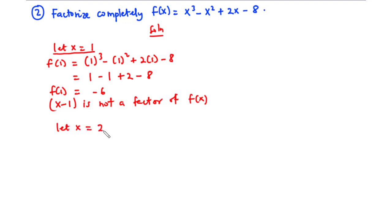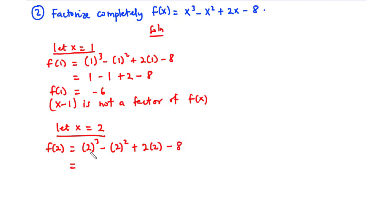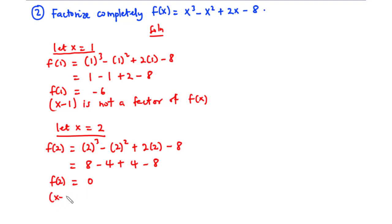So we need to check another value. Let x equal 2. Then f of 2 equals 2 cubed minus 2 squared plus 2 times 2 minus 8. That is 8 minus 4 plus 4 minus 8. So 8 minus 8 is 0, and negative 4 plus 4 is 0. So f of 2 is equal to 0. Since f of 2 equals 0, it follows that x minus 2 is a factor of f of x.